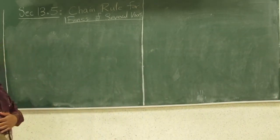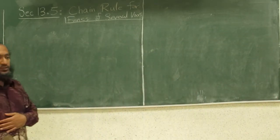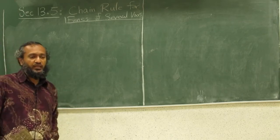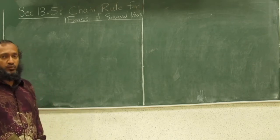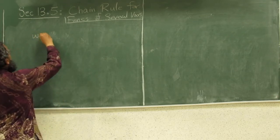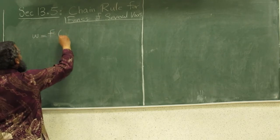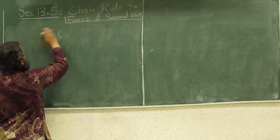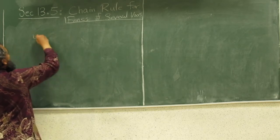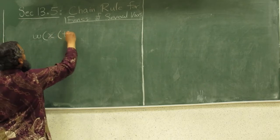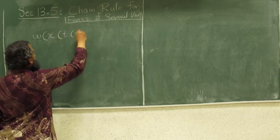In this section we will be looking at the chain rule for functions of several variables. Let's first recall the chain rule for a function of one variable. Suppose you have w as a function of x, which is a function of t, which is a function of s.